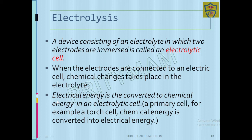In an electrolytic cell, electrical energy is converted into chemical energy. In a regular cell, the reverse happens — chemical energy is converted into electrical energy.